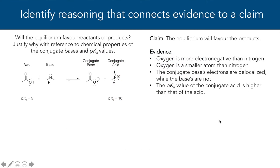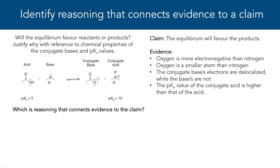Let's try one more example. This time I want you to identify the reasoning that connects evidence to a claim. On the left we have our question: will the equilibrium favor reactants or products? Justify why with reference to the chemical properties of the conjugate bases and pKa values. Our claim is that the equilibrium will favor the products. Our evidence is: oxygen is more electronegative than nitrogen; oxygen is a smaller atom than nitrogen; the conjugate base's electrons are delocalized while the base's are not; and the pKa value of the conjugate acid is higher than that of the acid. Given this information, which is the reasoning that connects the evidence to the claim?